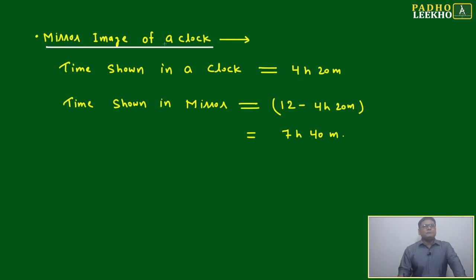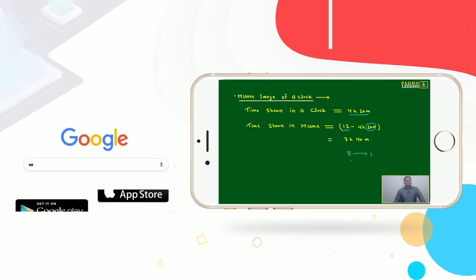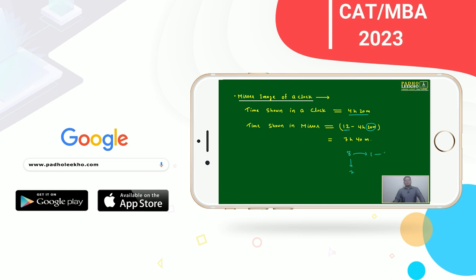One small concept is the mirror image of a clock. Time shown in a clock, just suppose 4 hours 20 minutes, then time shown in mirror, just subtract 12 minus 4 hours 20 minutes. First you subtract 12, it will become 8, but 20 minutes to subtract, this 8 hours one you have to take. Then this will become 7, and 1 means 60 minutes. Afterwards, 60 minus 20, it will become 40. Your time will be 7 hours 40 minutes.